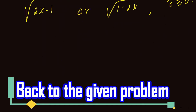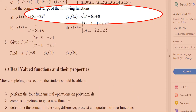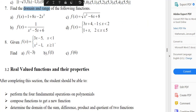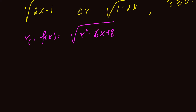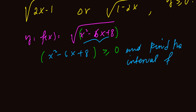Question number 7 part C. F of x is equal to square root of x squared minus 6x plus 8. We will find the domain and range of this function. The domain requires the expression inside the bracket to be greater or equal to 0. So x squared minus 6x plus 8 must be greater or equal to 0. We have to find the interval for x which will be our domain.